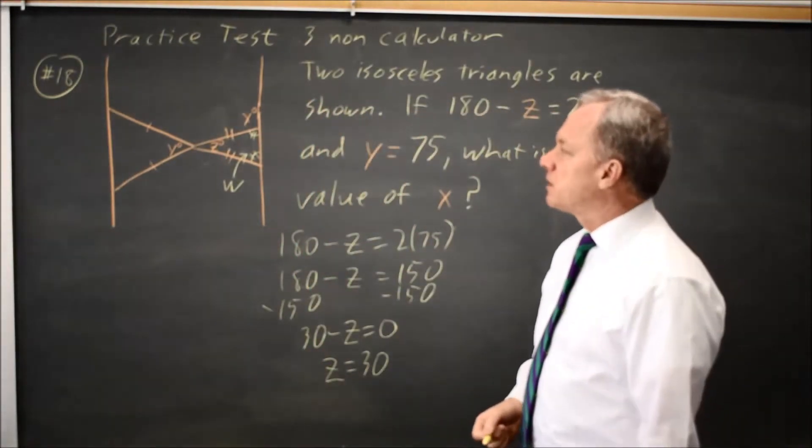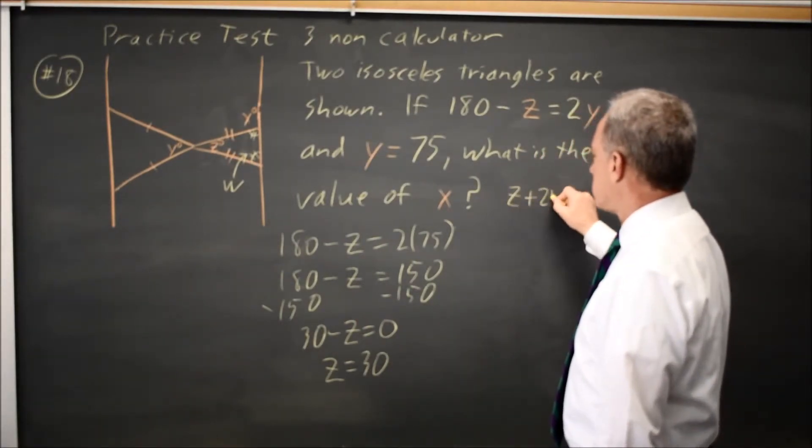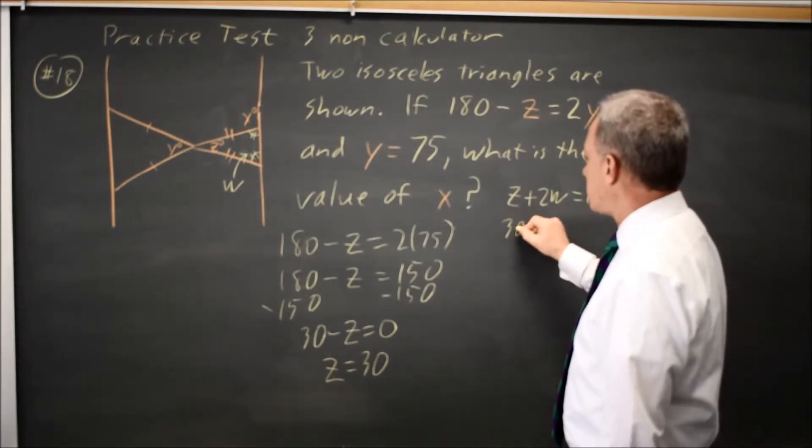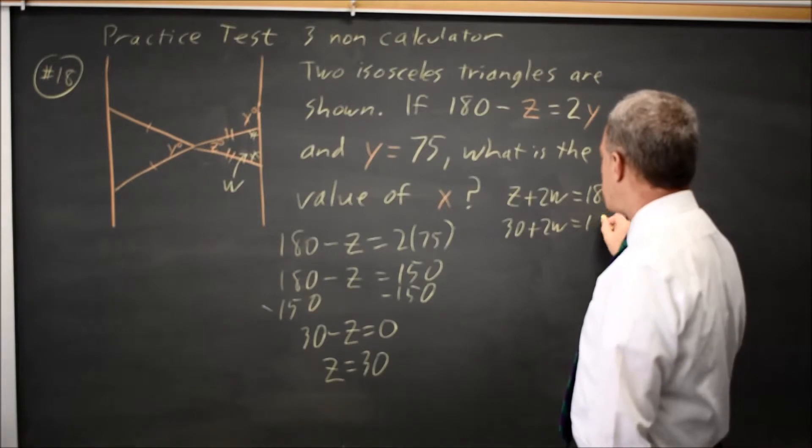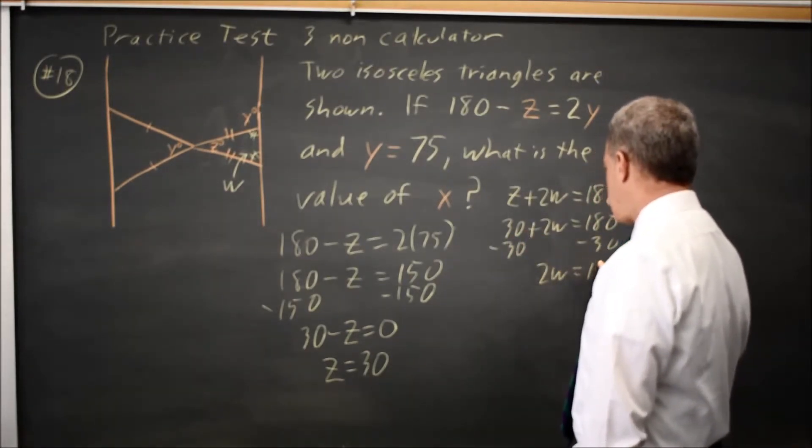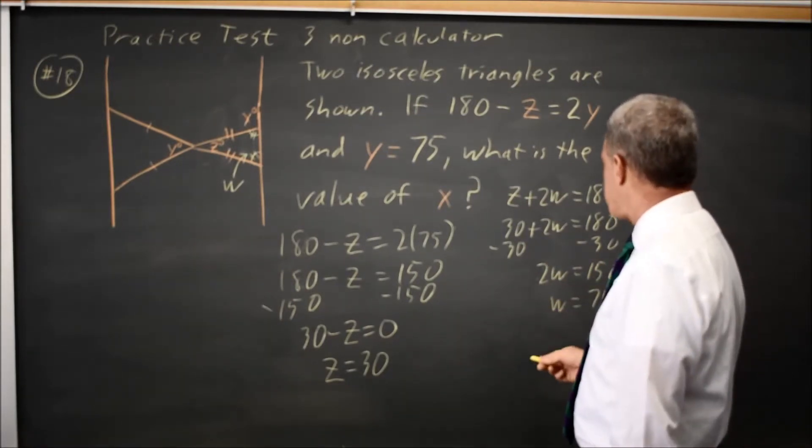Since z equals 30, z plus 2w equals 180, and z equals 30, 30 plus 2w equals 180. Subtract 30 from both sides, and 2w equals 150. w equals 75 if I divide both sides by 2.